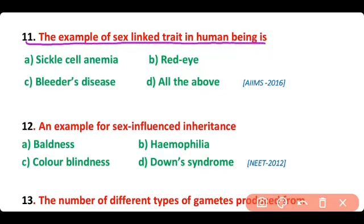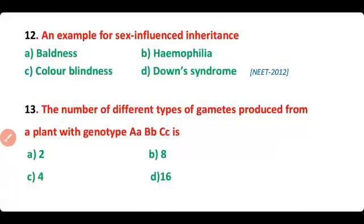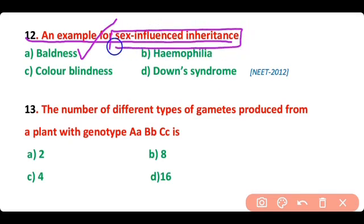Question number 11. The example of sex-linked trait in human beings is — so correct answer is option C. Bleeder's disease, which is also known as hemophilia, is an example of a sex-linked trait in human beings.